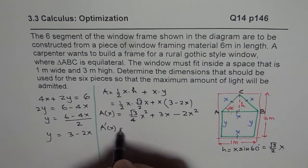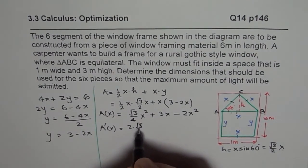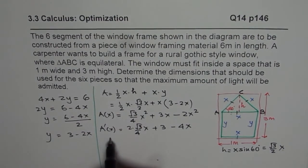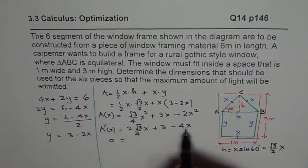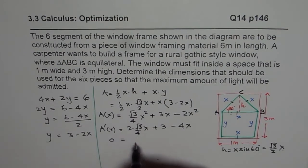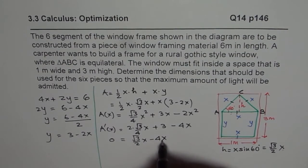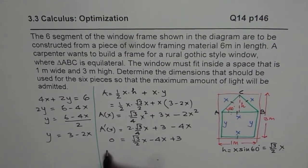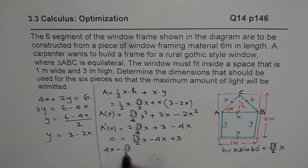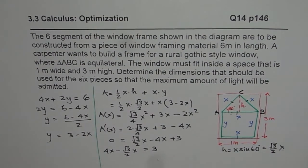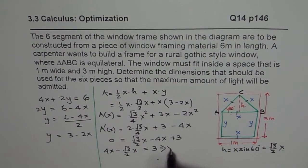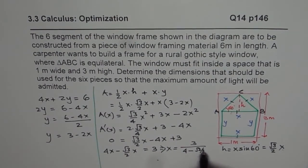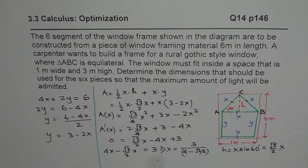And derivative of this function equals to 2 times square root 3 over 4x, plus 3 minus 4x. To maximize, derivative should be 0. So we can substitute and find the value. This is square root 3 over 2x. We will do 4x minus square root 3 over 2x. We could take x common, equals to 3. Or from here, x is equals to 3 divided by 4 minus square root 3 over 2. So that is the value of x which we are looking for.